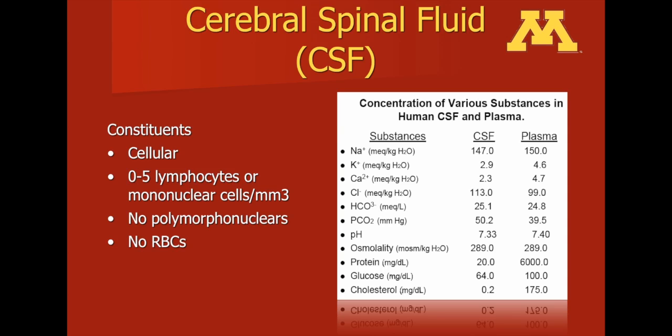Because cerebrospinal fluid is devoid of any red blood cells, as can be seen by its clear tinge, the protein content is extremely low. This is very important when assessing someone for a cerebrospinal fluid infection. If there is bacteria within the cerebrospinal fluid, that will increase the protein content. Typically with a bacterial infection, the protein will be much higher. In addition, bacteria need to feed on something and will consequently consume glucose, causing the glucose content to go down. Therefore, the most important substances to recognize are the protein and the glucose — with a bacterial infection, protein will be elevated and glucose will be decreased.